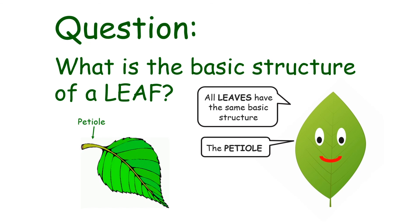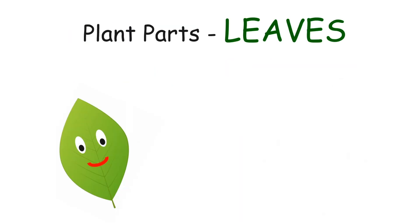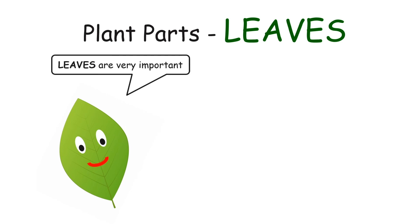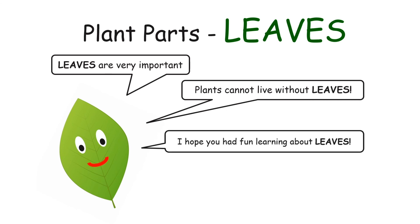The basic structure of a leaf includes the petiole, the veins, and the midrib. Leaves are very important — plants cannot live without leaves. I hope you had fun learning about leaves.